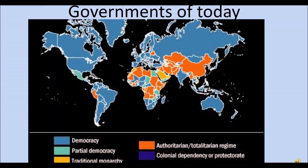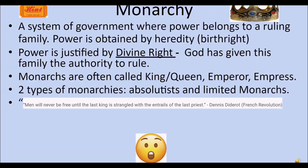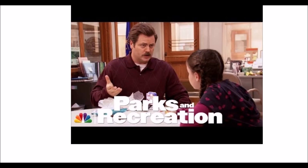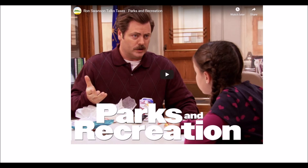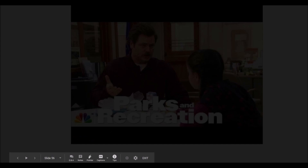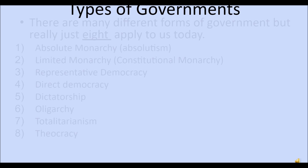We're going to roll on and talk systems of government today. I'll keep it a shorter lecture to make sure you have time for the processing assignment, which I hope you will enjoy. So, types of governments — there are many different forms of government, but really just eight apply to us in our modern world.